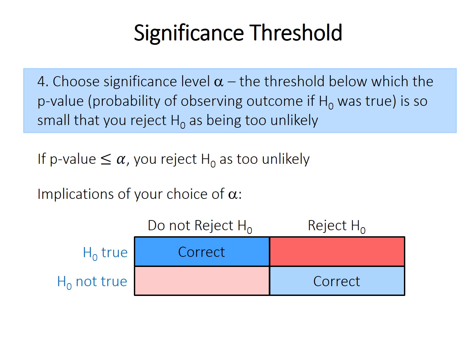So two of the possibilities end up correctly reflecting reality. So if we make those choices under those circumstances, we are correct. But the other two are erroneous conclusions.